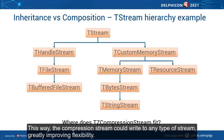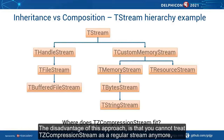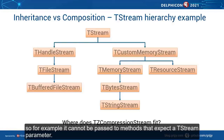Another solution is to use composition instead of inheritance. In this case, TZCompressionStream could be a regular TObject descendant that has a field or property of type TStream. This stream provides the underlying storage mechanism. This way, the compression stream could write to any type of stream, greatly improving flexibility. The disadvantage of this approach is that you cannot treat TZCompressionStream as a regular stream anymore, so it cannot be passed to methods that expect a TStream parameter.